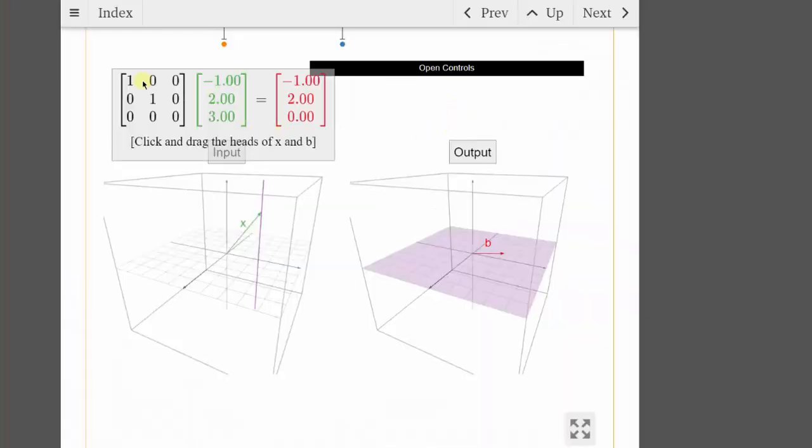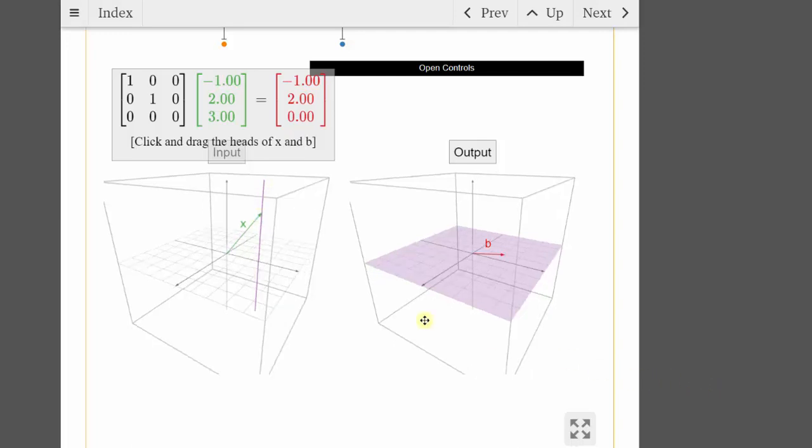At the top of the screen, we have matrix A, and then times the vector x in green equals in red, the vector b. So as we animate vector x in R3, notice how all the images of vector x under t fall in the xy plane.